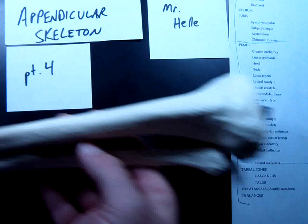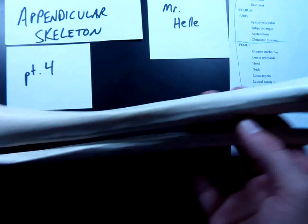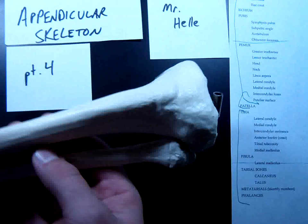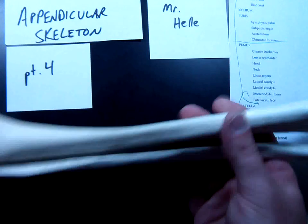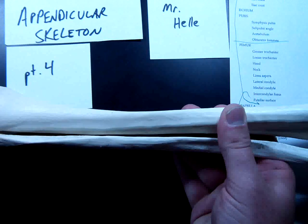Tibia is this ginormous shin bone that you have. It's the big one. You have a big one and a little one. The tibia is palpable. If you feel the front of your lower leg, you can feel the tibia.